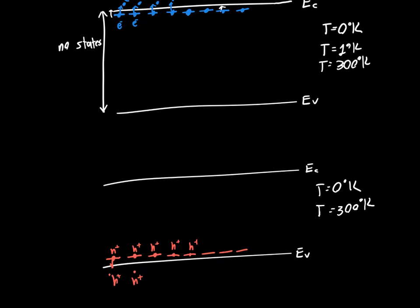Just to give you a sense of scale, these ionization energies are typically on the order of like 40 millielectron volts, which is really tiny.